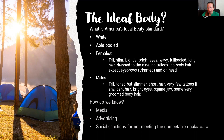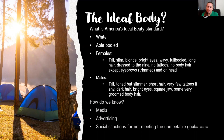For males: toned, very tall but still slim, short hair, very few tattoos if any, dark hair, bright eyes, square jaw, and very groomed body hair. We know this because we see it in media, in advertising, and in the social sanctions for those who don't meet these ideals. These goals are mostly unobtainable for a lot of us — especially the whiteness, the able-bodied standard, height, and we can't control what color hair we naturally have.